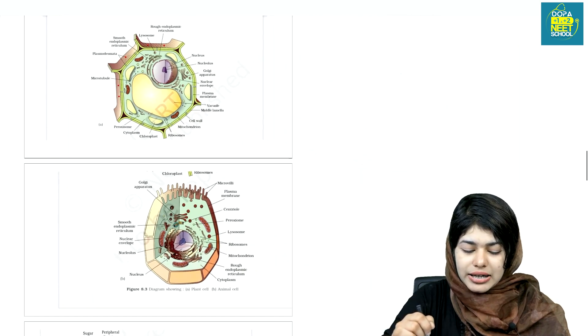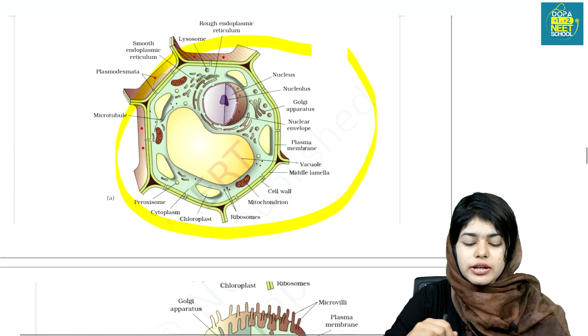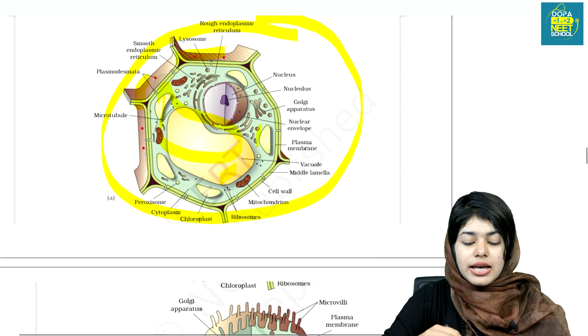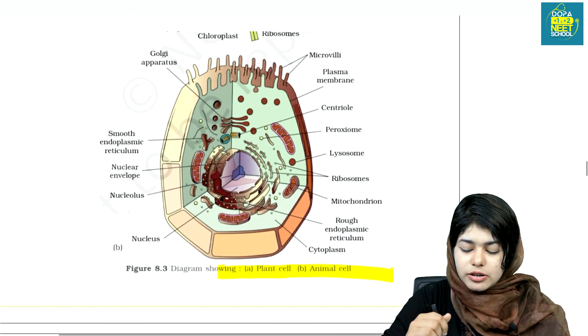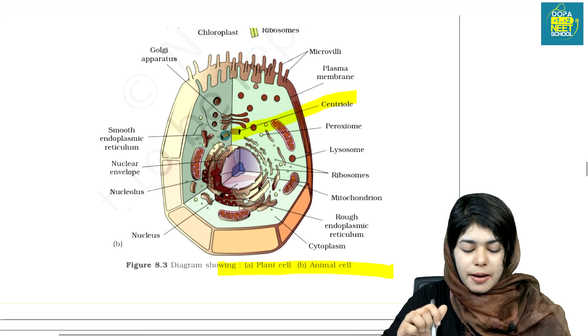Next, we have a figure of plant and animal cells, which is important. Plant cells have large central vacuole, chloroplast, and cell wall. Animal cells have centrioles and lack cell wall, only cell membrane.